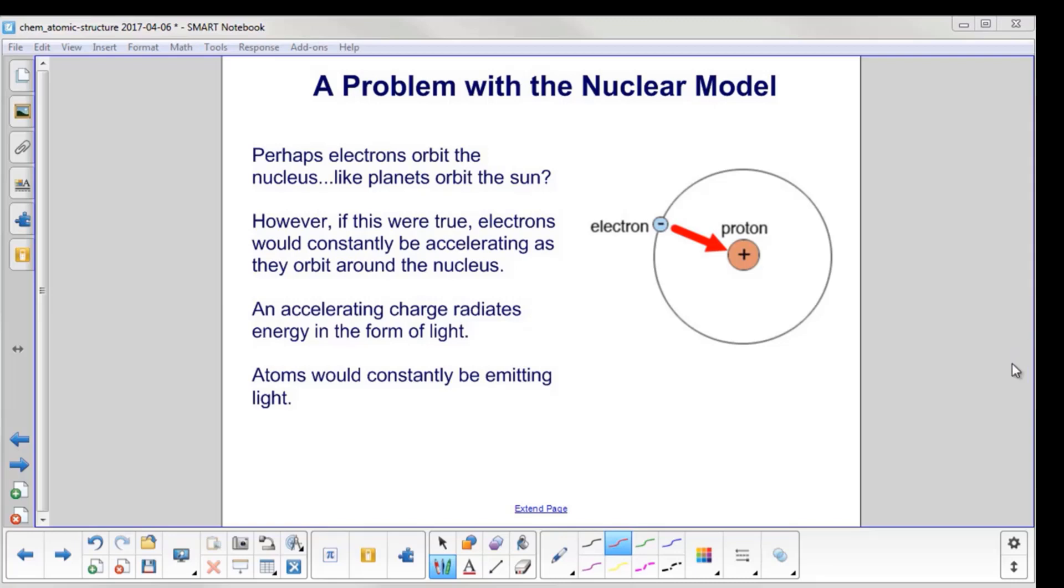However, if this were true, electrons would constantly be accelerating as they orbit the nucleus. So go back to your centripetal motion studies, and you can have a constant speed here, but you have acceleration because the direction of the velocity keeps changing. So you're accelerating the whole time.